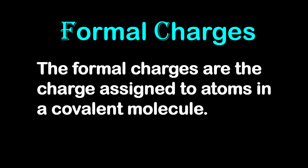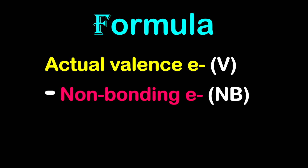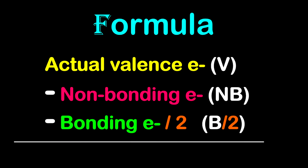When you talk about formal charges, you're talking about the charges that are assigned to atoms in a covalent molecule. The formula to determine the formal charge on each atom: first you have to determine the actual valence electrons, let's call that V, then minus the non-bonding electrons, let's call it NB, then minus the bonding electrons divided by 2, let's call that B divided by 2.